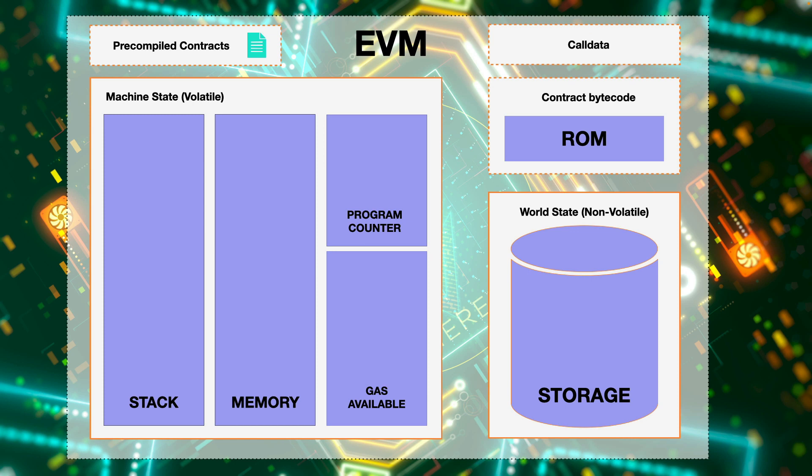The brain that's constantly processing these changes of state is the virtual machine called the EVM. It's what's applying changes to this globally shared world state. The EVM uses a stack-based processor and has a lot of similar parts to a real computer: a stack-based processor, a volatile memory location, a permanent storage location that stores the entire state of Ethereum, and auxiliary data locations like call data — a special location inside the EVM that you'll learn about as a Solidity developer.